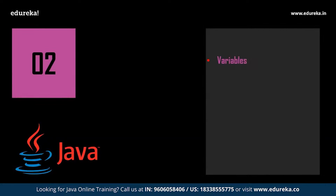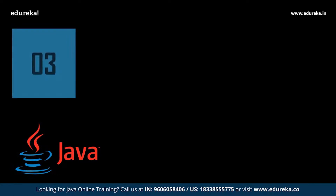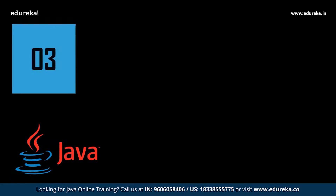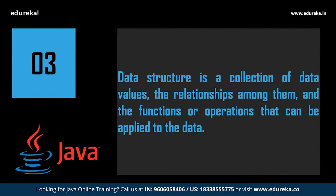Next, we shall get into variables, data structures, data types, methods, and the libraries available in Java. Similar to the C programming language, Java has all the similar types of variables and data types — integer, float, double, string, and character, to name a few. Following data types and variables, we have data structures. A data structure is a data organization, management, and storage format that enables efficient access and modification — a collection of data values, their relationships, and the operations that can be applied. In Java we have arrays, linked lists, and everything similar to C.